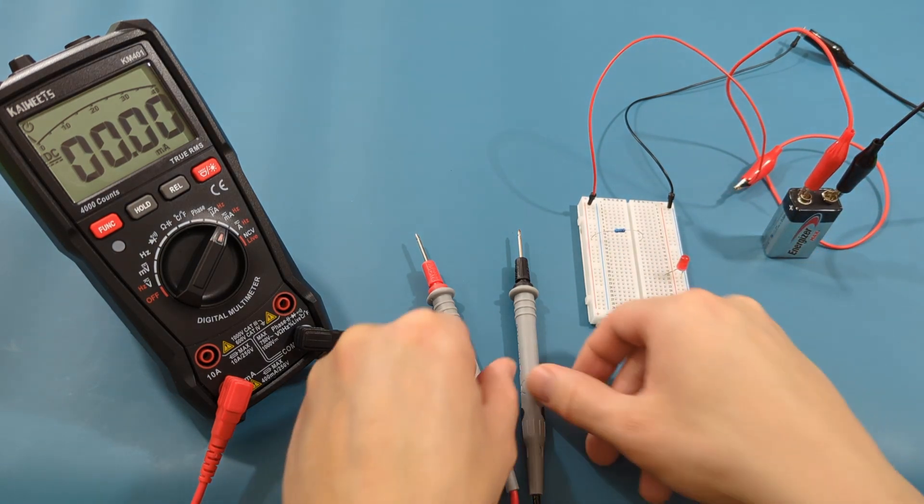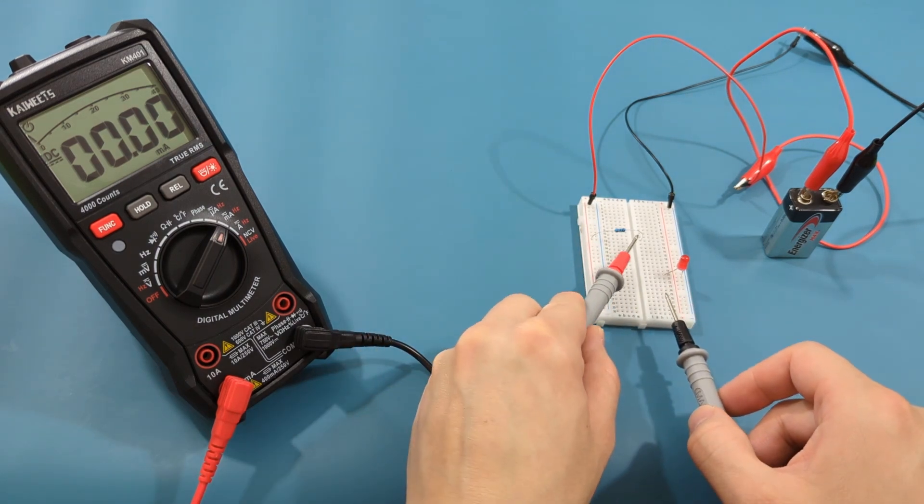On the multimeter, the reading is around 3.5 milliamperes. Very good.